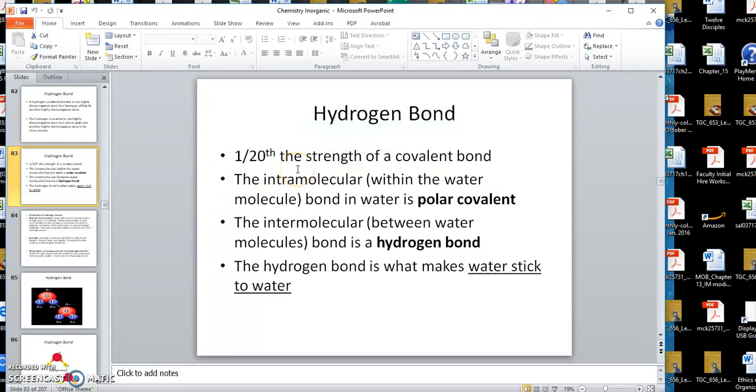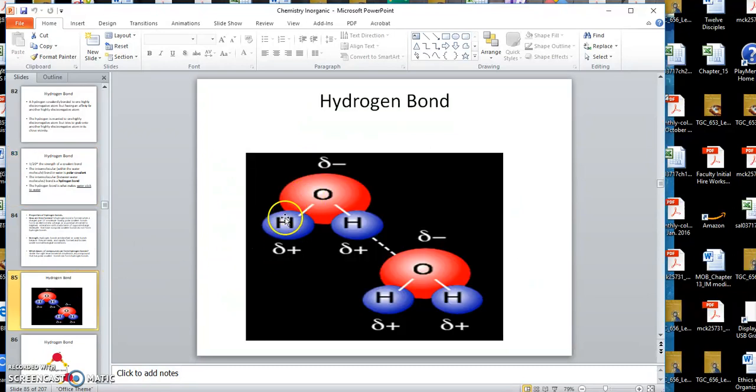So in a water molecule, let's take for example, the intramolecular bond within the water molecule is polar covalent. The intermolecular bond between one molecule and the other is a hydrogen bond. In this case you can see this hydrogen is covalently bonded to this oxygen, which is highly electronegative, but it likes this other one too. And that's a hydrogen bond, so this molecule is being held by a weak force to this other molecule here.